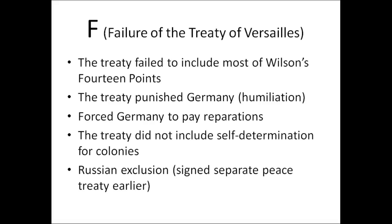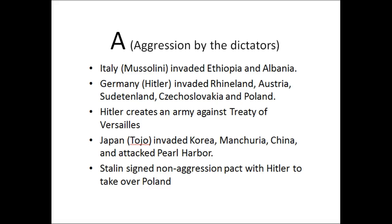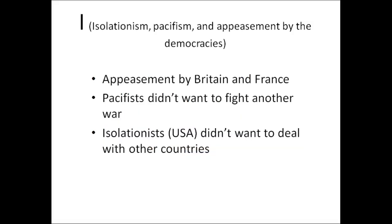A is for the aggression by the dictators. Mussolini and Italy invade Ethiopia and eventually Albania. Hitler invades the Rhineland, Austria, the Sudetenland, Czechoslovakia, and Poland, and creates an army in violation of the Treaty of Versailles. Japan invades Korea, Manchuria, and China, and then two years into World War Two attacks Pearl Harbor, bringing in the United States. Stalin signs the non-aggression pact with Hitler to take over Poland.